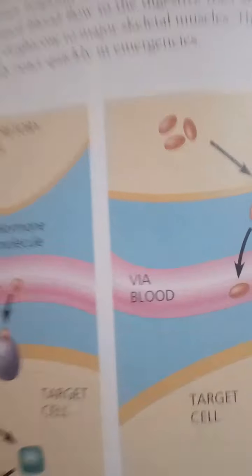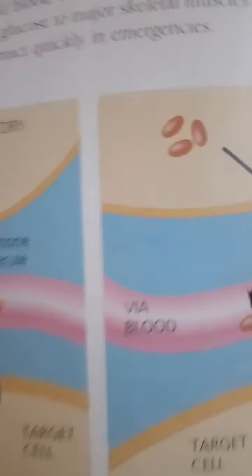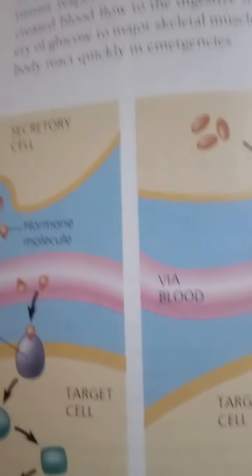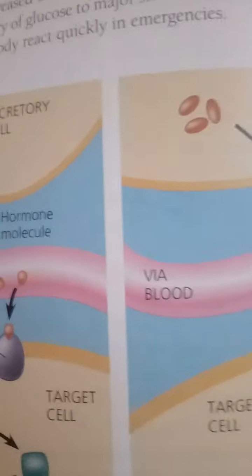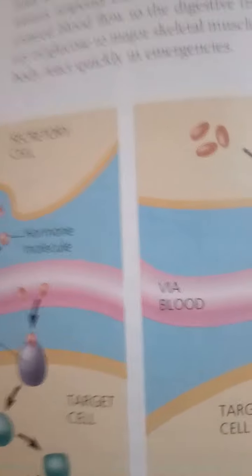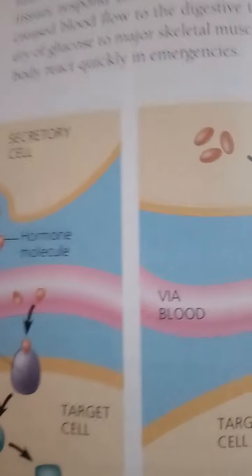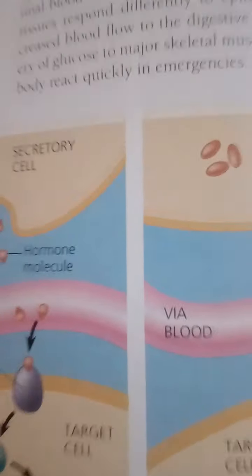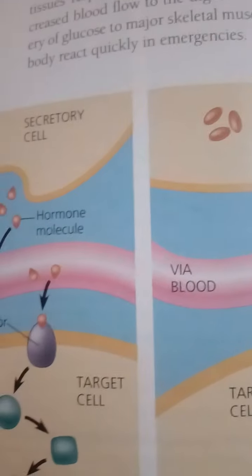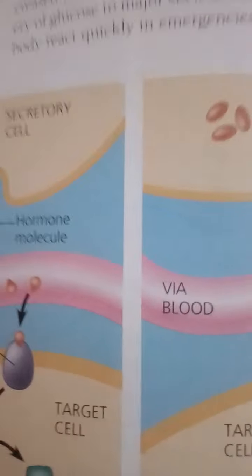The frog's skin appears light when melanosomes cluster tightly around the cell nuclei, and darker when melanosomes are dispersed through the cytoplasm. A peptide hormone called melanocyte-stimulating hormone controls the arrangement of melanosomes and thus the frog's skin color. Adding melanocyte-stimulating hormone to the interstitial fluid surrounding the pigment-containing cells causes the melanosomes to disperse.